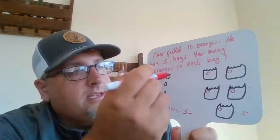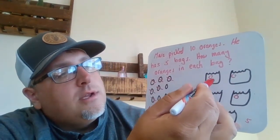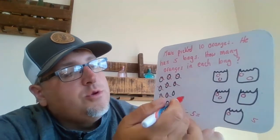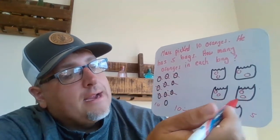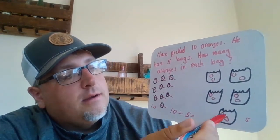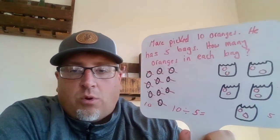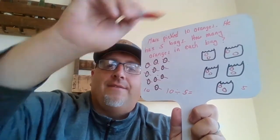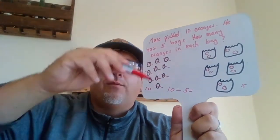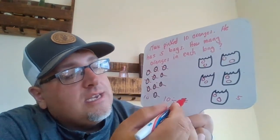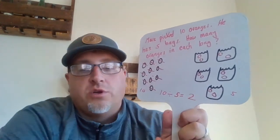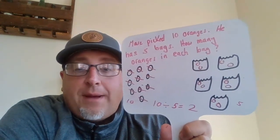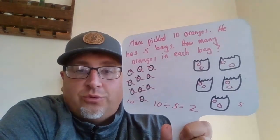Taking an orange and moving it over. I still have more oranges, so we go back to the beginning. Put an orange in that bag, put an orange in that bag, orange in that bag — two oranges left — put an orange in that bag, and put an orange in that last bag. As you can see, I crossed out all my oranges and equally distributed them. Each bag has two oranges. So ten oranges divided by five bags equals two oranges in each bag. Ten divided by five equals two.